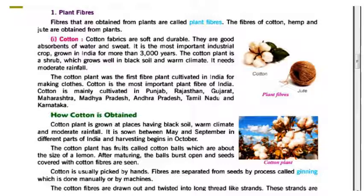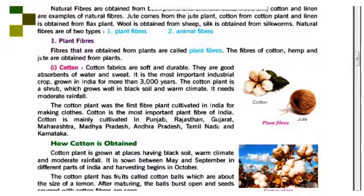Cotton is the most important industrial crop grown in India for more than 3,000 years. Cotton fabrics are soft and durable and are good absorbents of water and sweat. The cotton plant grows well in black soil and warm climate.